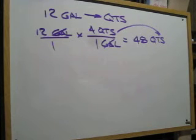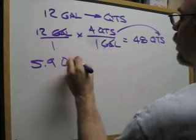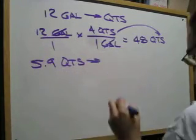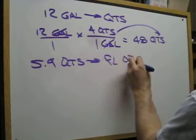If we were doing something like 34, 5.9 quarts, and we're trying to change that to fluid ounces.